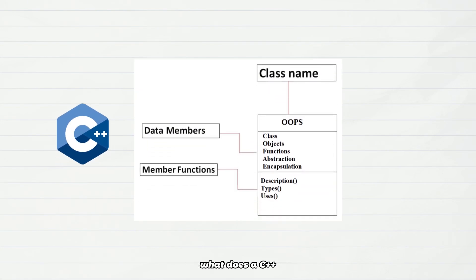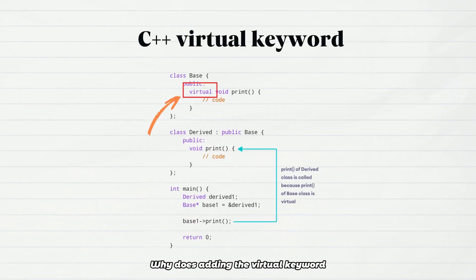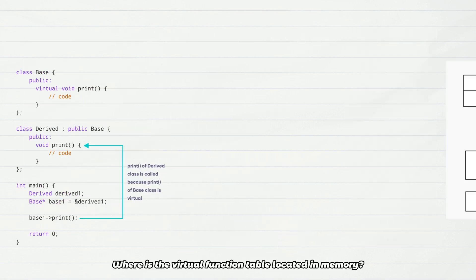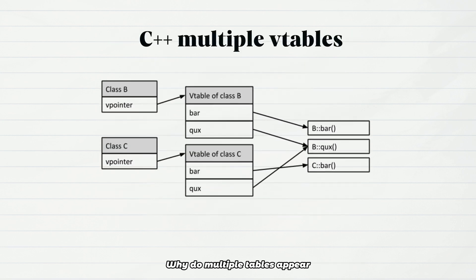Have you ever wondered what a C++ object really looks like in memory? It's not as simple as just having member variables. For example, where exactly does this pointer point? Why does adding the virtual keyword change the size of an object? Where is the virtual function table located in memory?